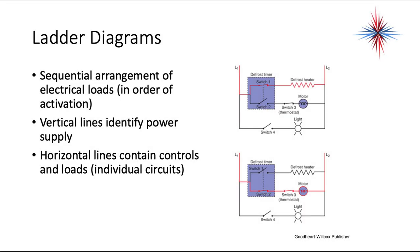Ladder diagrams are a sequential arrangement of electrical loads in order of activation. Vertical lines identify power supplies; horizontal lines contain individual controls and loads — sometimes individual circuits. The purpose of the ladder diagram is to show us the order of operation: when you close switch 4, what happens? When you close switch 2 and open switch 1, what happens?